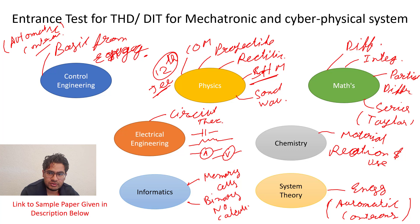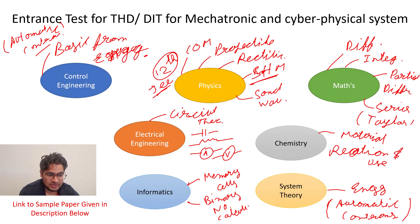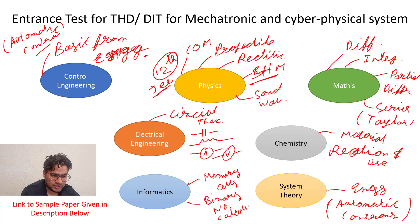In Electrical Engineering, you will get two or three questions from Circuit Theory only. You have to find the voltage or the current, but the circuits are not as simple as in 12th — they are a bit higher level, with capacitors and other elements combined. These are basics as per your bachelor's, not from 12th grade.